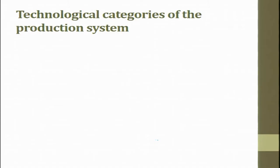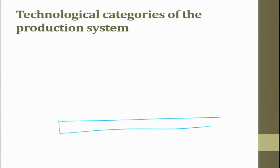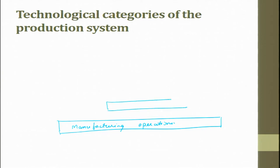Welcome to the course Product Design and Manufacturing. The next topic of discussion is Technology Categories of Production System. Here we will have manufacturing operations, manufacturing system, and manufacturing support group.